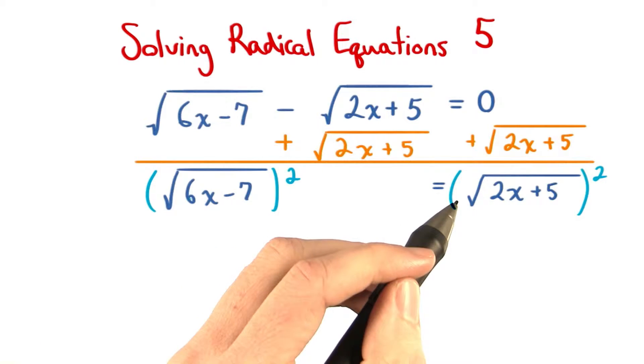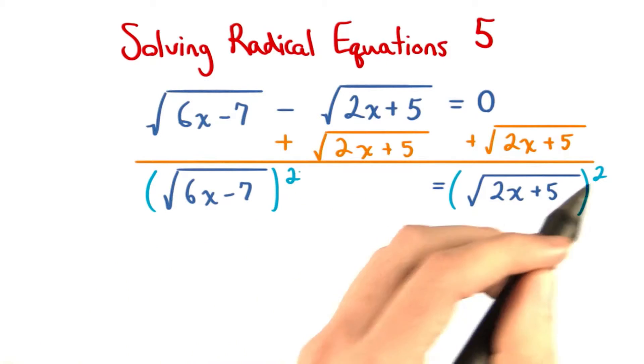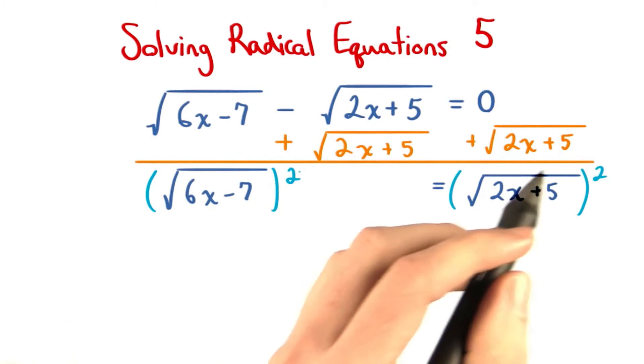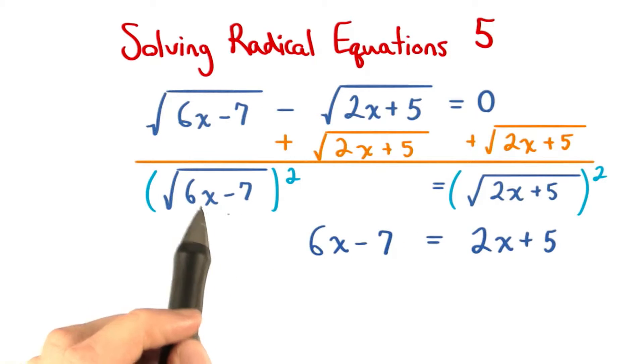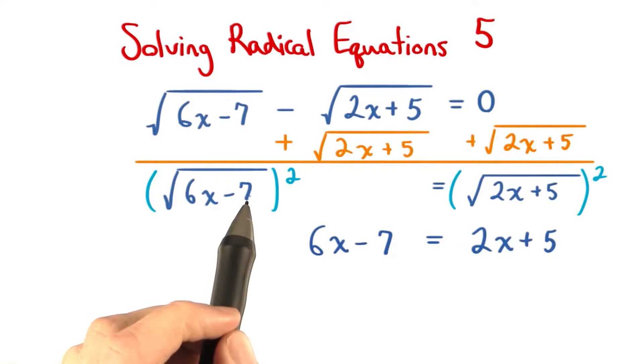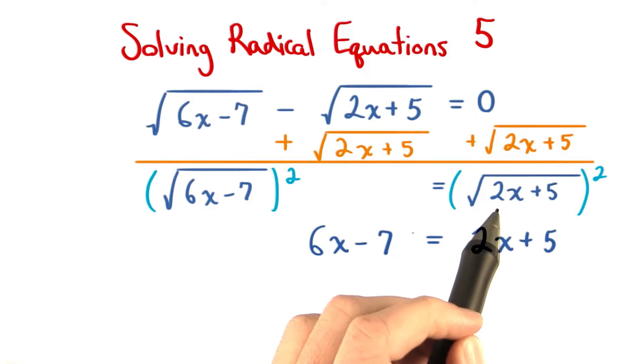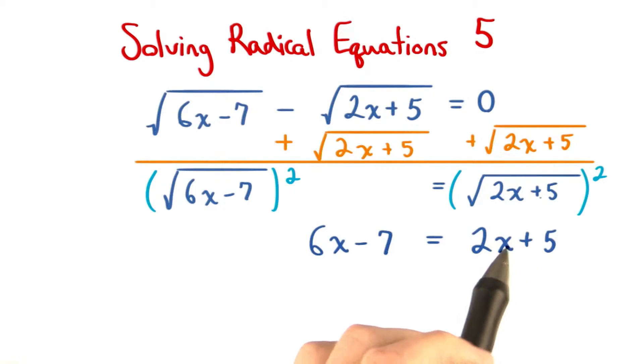Now that each radical is on either side of the equal sign, we can square both sides to undo these square roots. So, on the left, we'll just be left with the radicand, 6x minus 7. And on the right, we'll be left with this expression, 2x plus 5.